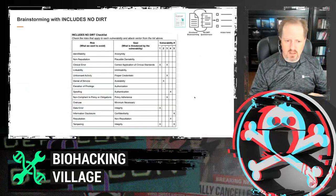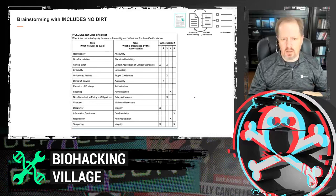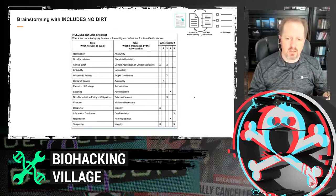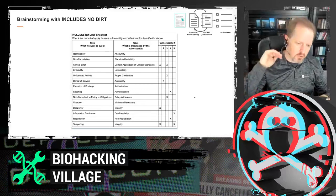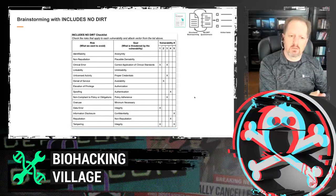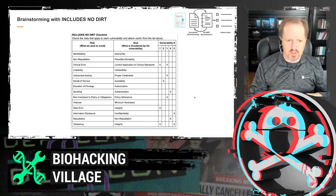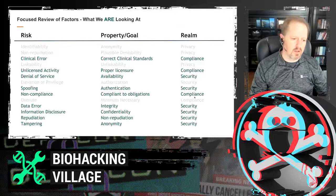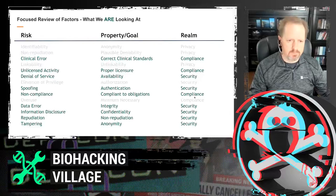When we completed that process, we were able to take the identified vulnerabilities — five in our example — and map them to specific areas in the Includes No Dirt model. Anonymity doesn't apply in this one, but clinical error certainly does, as does denial of service and spoofing. In the interest of time, we're not going to go through every risk's answers, but we'll go through the ones that apply. The factors that do apply are: clinical error, unlicensed activity, denial of service, spoofing, noncompliance, data error, information disclosure, repudiation, and tampering.